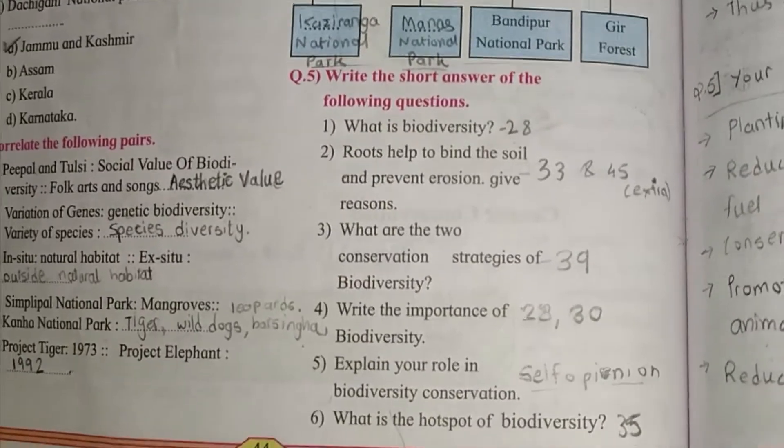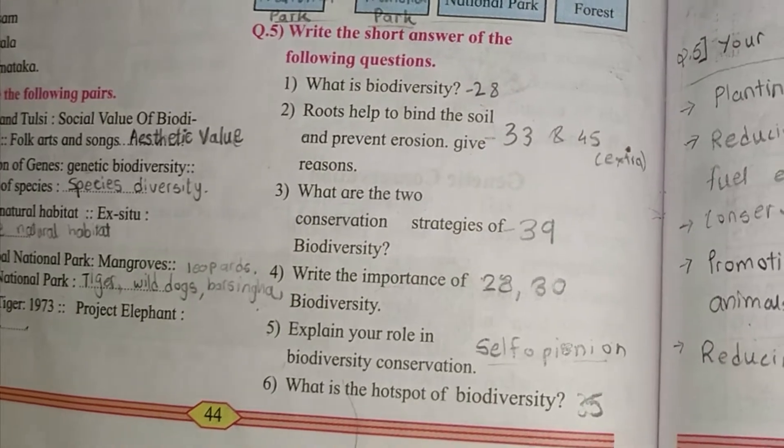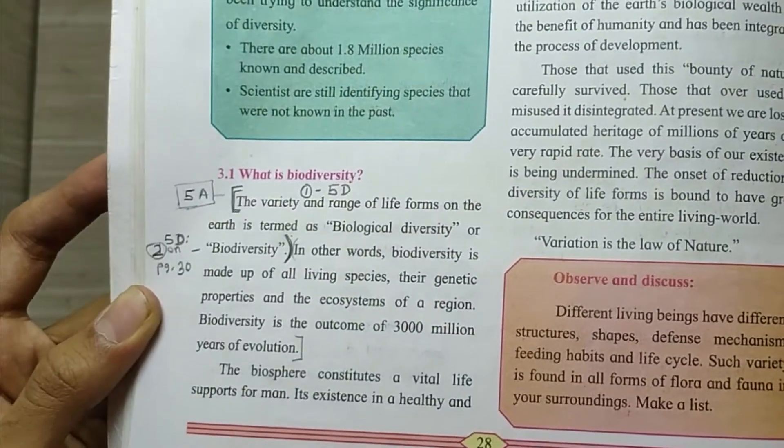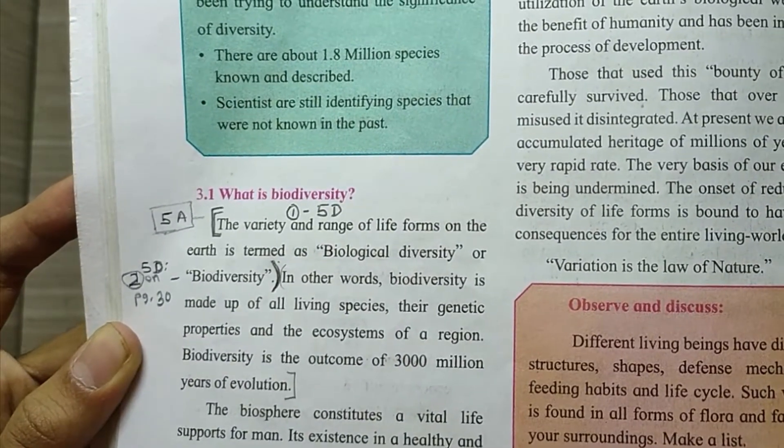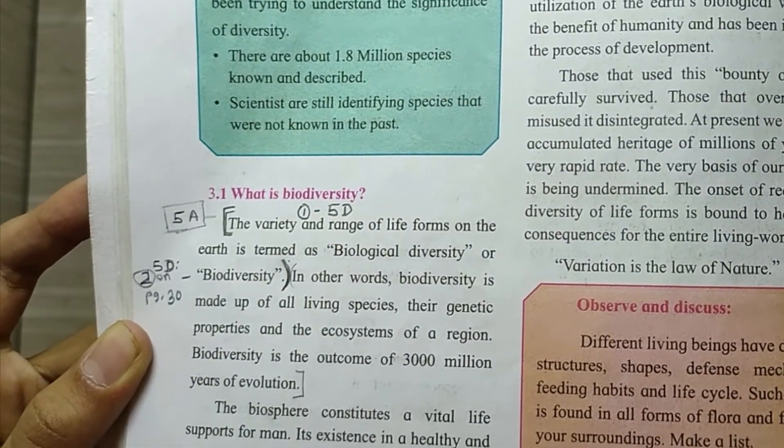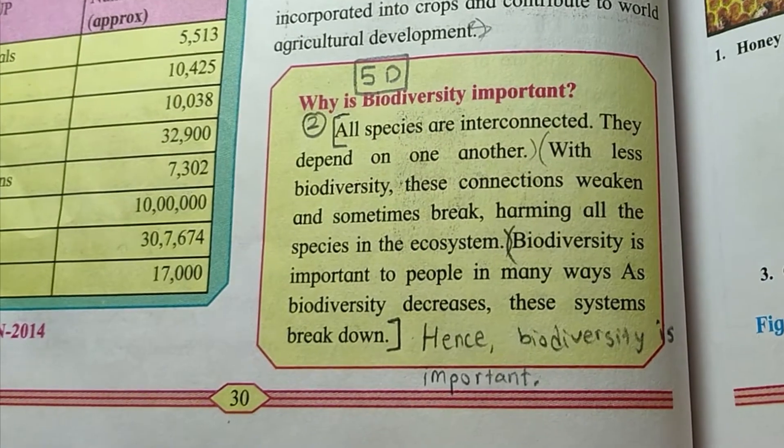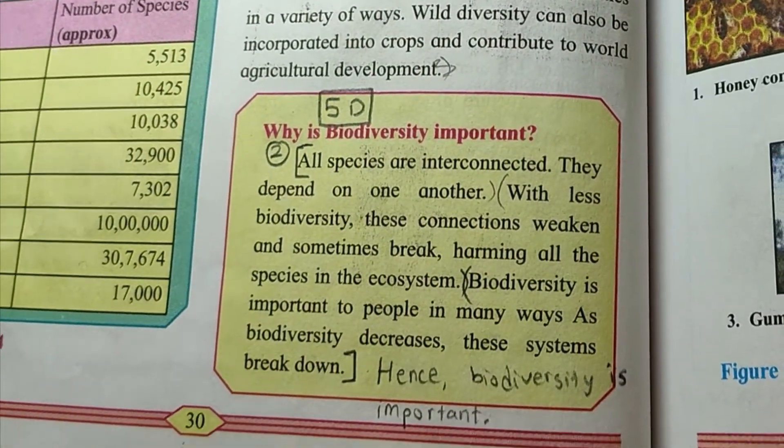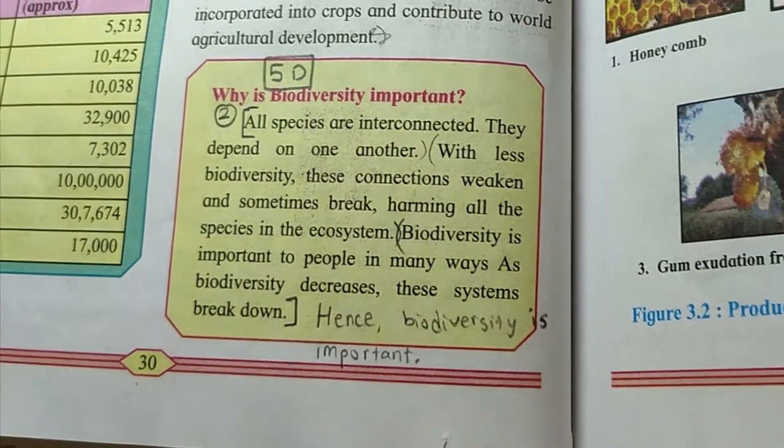Question number 4, write the importance of biodiversity. The answer is on page number 28 and 30. On page number 30, in this yellow box, they have given the answer. Write it as it is, and write the last point as hence, biodiversity is very important.